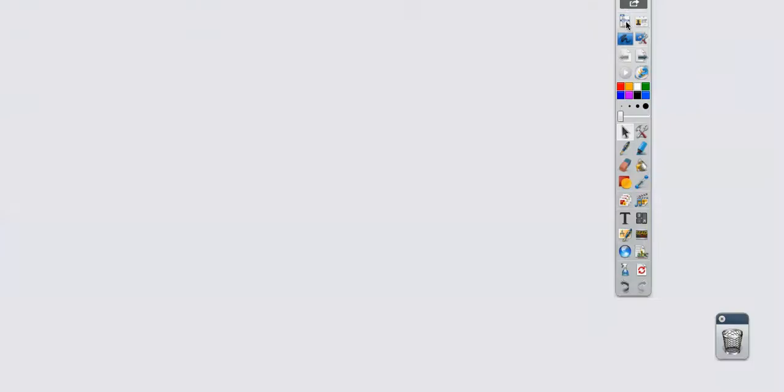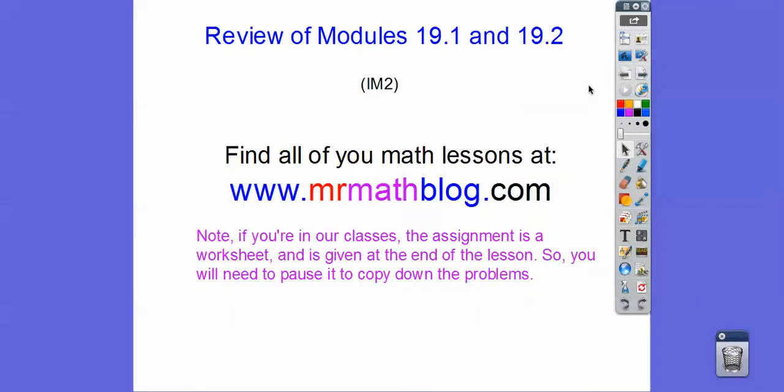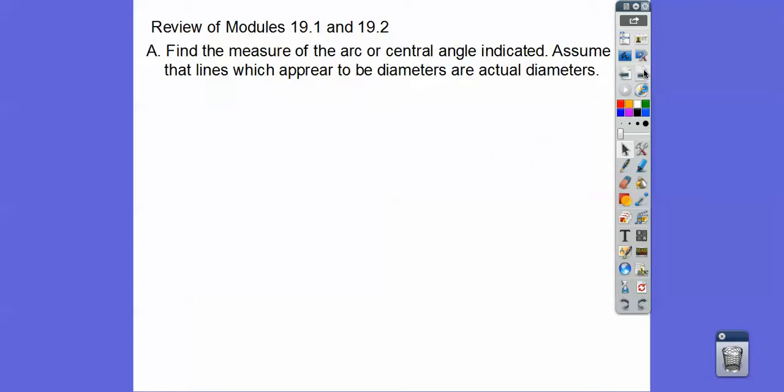Let's go ahead and get started here. If you are in our class, we're going to be giving you a handout. So I have it on here, so you'll just have to pause it and get the problems. Find the measures of the arc or central angle that's indicated. Assume that lines which appear to be diameters are the diameters.